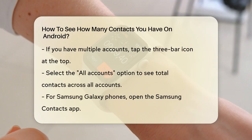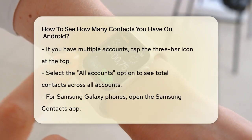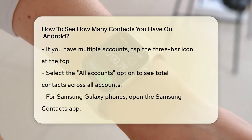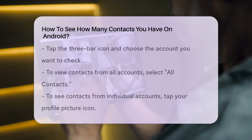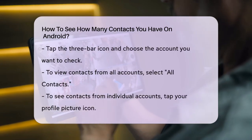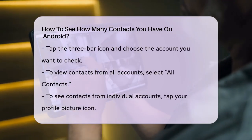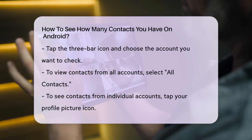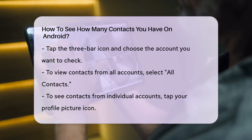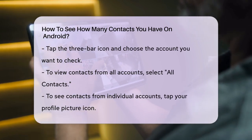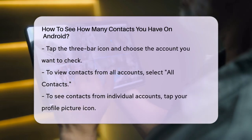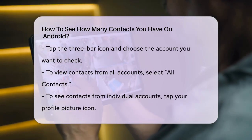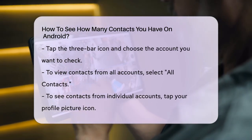For Samsung Galaxy phones, the process is slightly different. Open the Samsung Contacts app, tap on the three bar icon at the top, and then select the account you want to check. To see contacts from all accounts, tap on All Contacts. If you want to see the number of contacts from each account separately, tap on your profile picture icon at the top and select the preferred account.